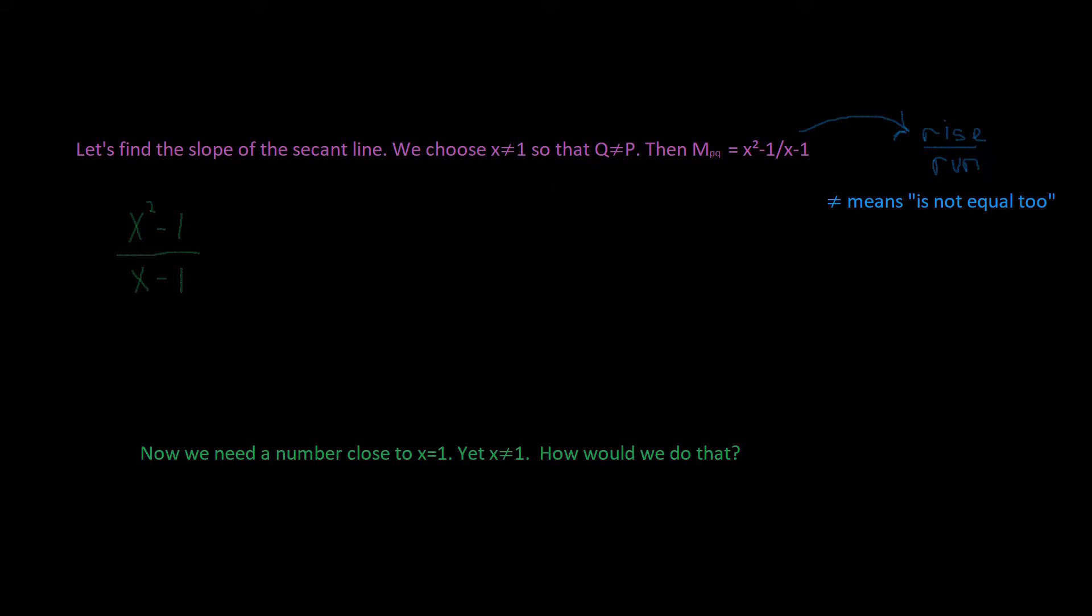Earlier, we're given our points P and Q. P was (1, 1), and Q was (x, x squared). So we're given these two points, and we're going to do the rise over the run. It would be x squared minus 1 over x minus 1. Because this is x, and this is y.